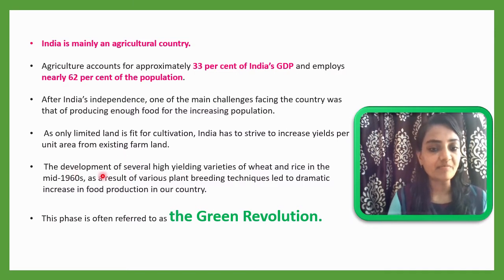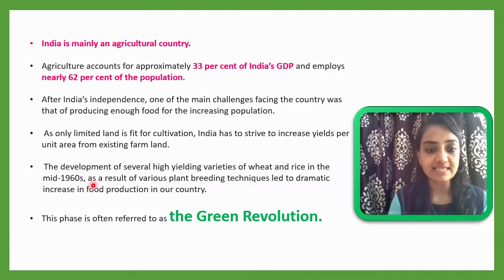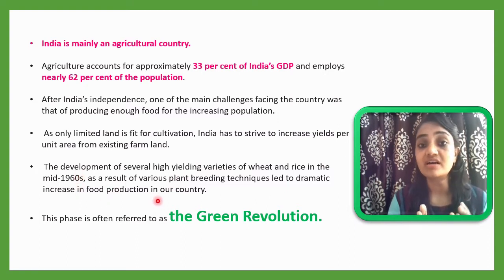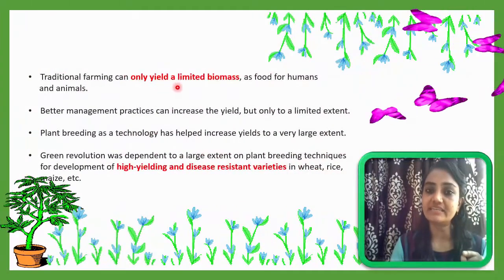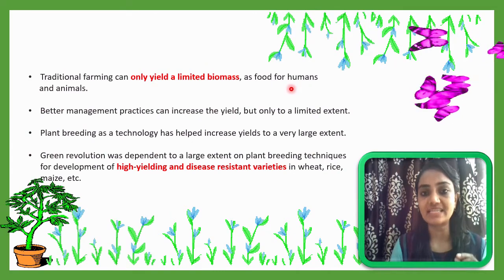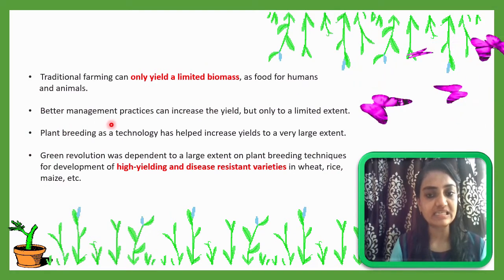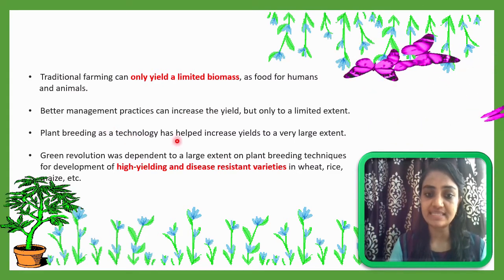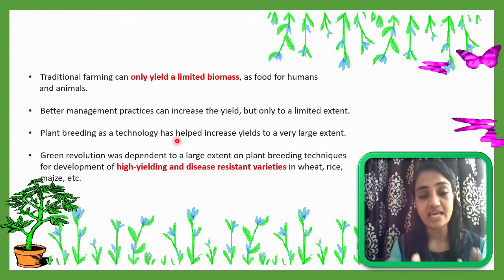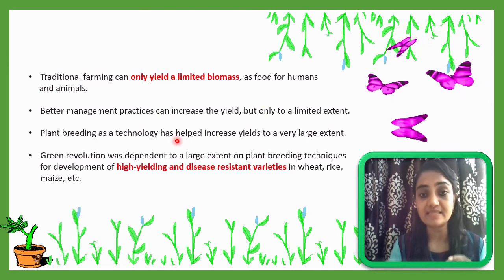The development of several high-yielding varieties of wheat and rice in the mid-1960s, as a result of various plant breeding techniques, led to a dramatic increase in food production in India. This phase is often referred to as the Green Revolution. Traditional farming can only yield a limited biomass as food, and better management practices can increase yield only to a limited extent. Plant breeding as a technology has helped increase yield to a very large extent, making it a boon for agricultural fields.